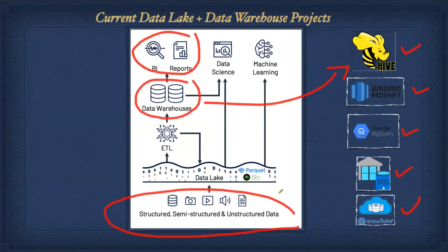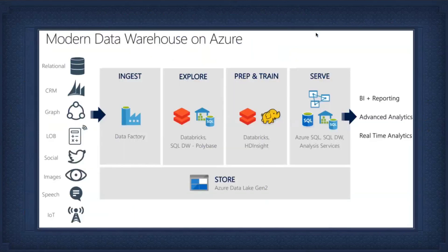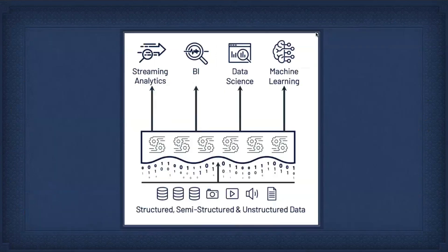In a modern data lake setup you manage the data lake separately and the data warehouse separately. Depending on the cloud, that could be Amazon Redshift, Google BigQuery, Azure SQL, or third-party Snowflake. With the latest lake house architecture, you don't need a separate warehouse — everything can go through the modern unified architecture.